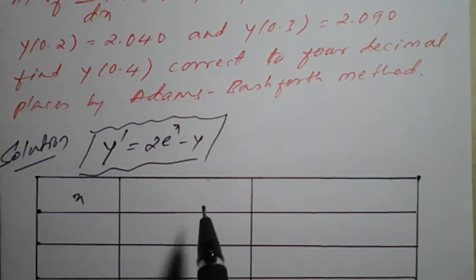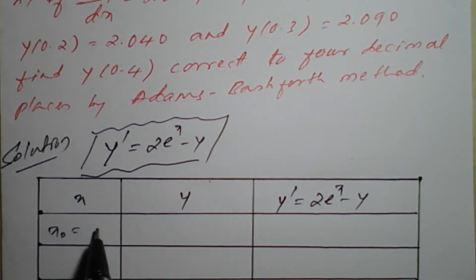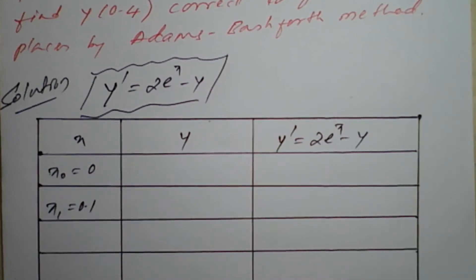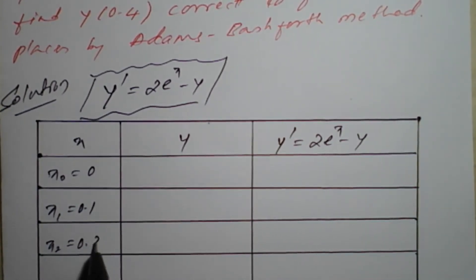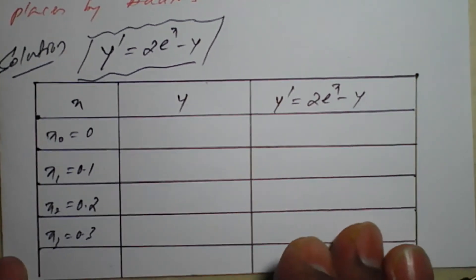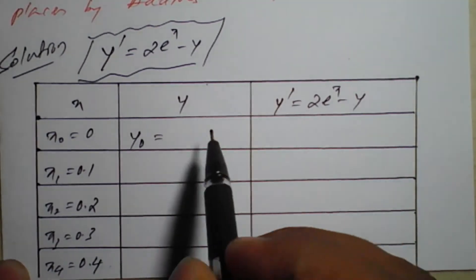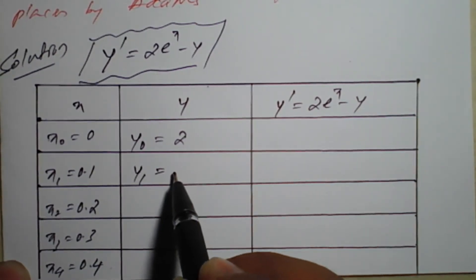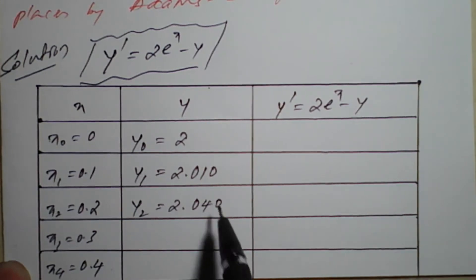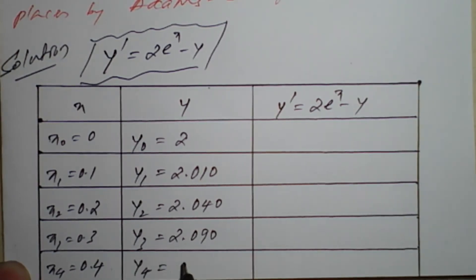From the table, the x values are: x0 = 0, x1 = 0.1, x2 = 0.2, x3 = 0.3, and x4 = 0.4 which we need to find. The y values are: y0 = 2, y1 = 2.010, y2 = 2.040, y3 = 2.090, and y4 is a question mark. The derivative y' = 2e^x − y will also be computed for each row.